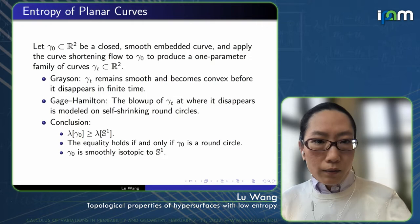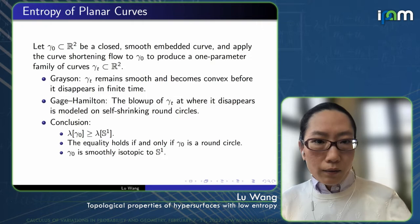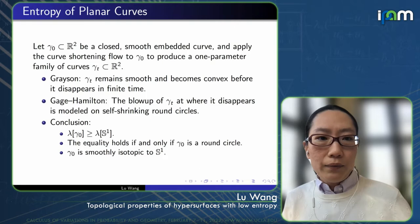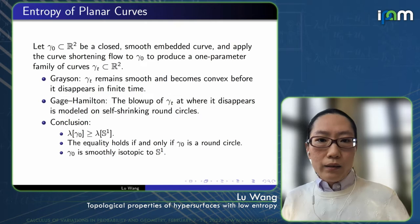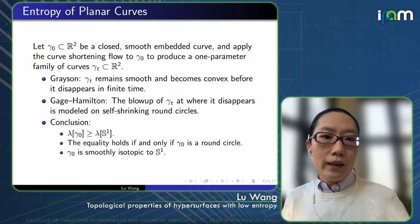By a classical result of Grayson, this curve γ_t will remain smooth and become convex before it disappears in finite time. After it becomes convex, one can apply the Gage-Hamilton theorem to show that the blowup of this family of curves where it disappears looks like self-similarly shrinking round circles in the plane.